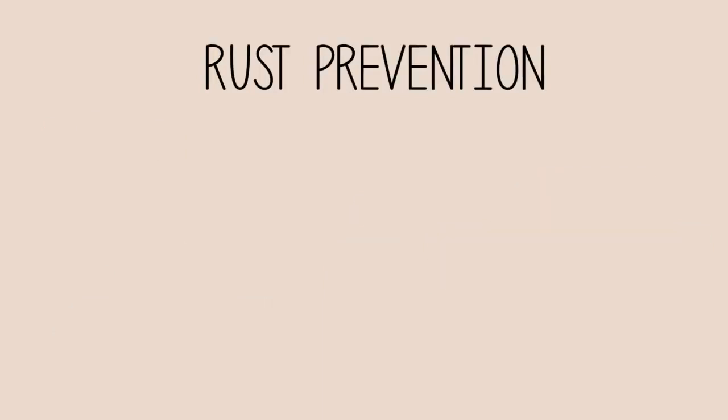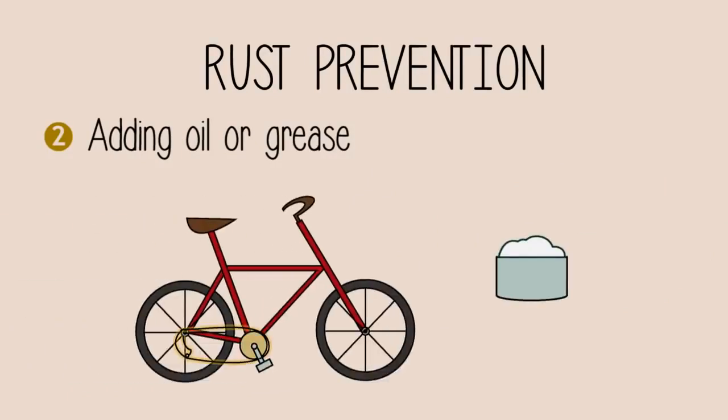Another method to prevent rust is by placing a layer of oil or grease. This is done on many bicycle chains. It helps lubricate the moving parts, which reduces friction and slows down the rusting process.